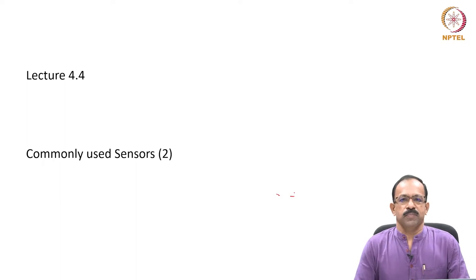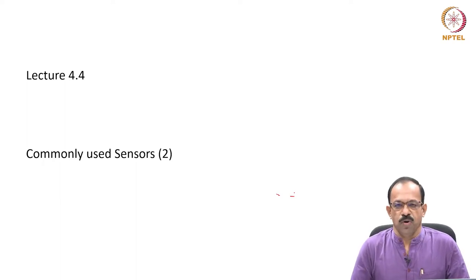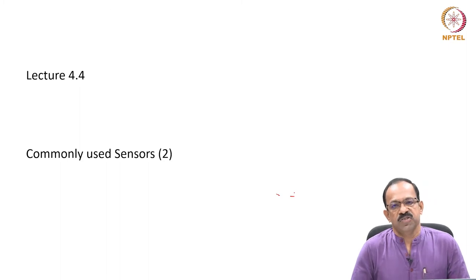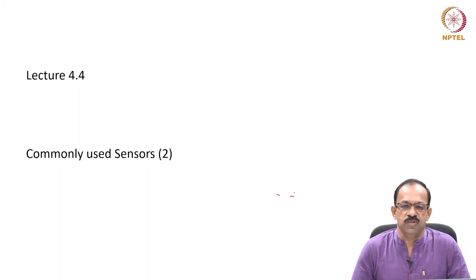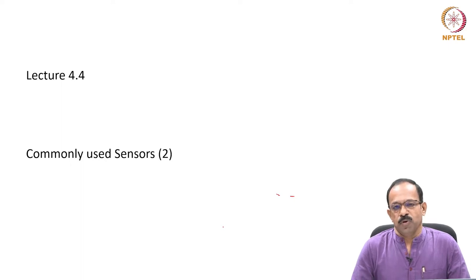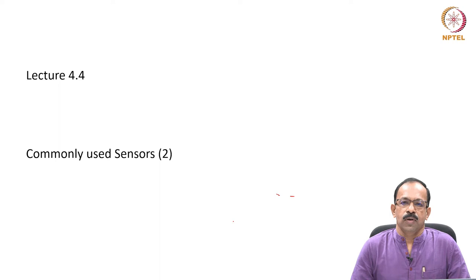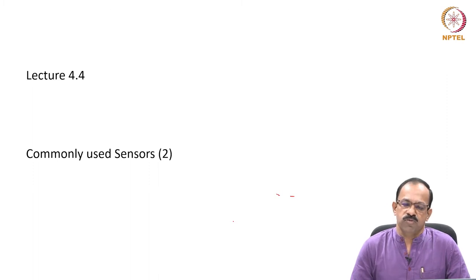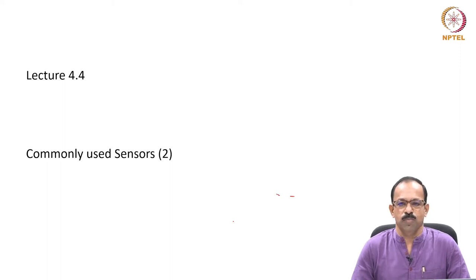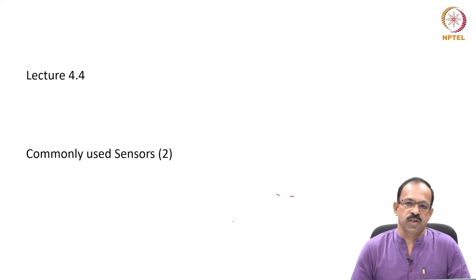Hello everyone, welcome back. We will continue the discussion on sensors. In the last lecture, we discussed about a few sensors commonly used for dead reckoning of mobile robots. We talked about optical encoders used for position sensing and RPM sensing to identify distance travelled. We also talked about heading sensors — the compass and the gyroscope — including mechanical construction and MEMS-based gyroscopes.